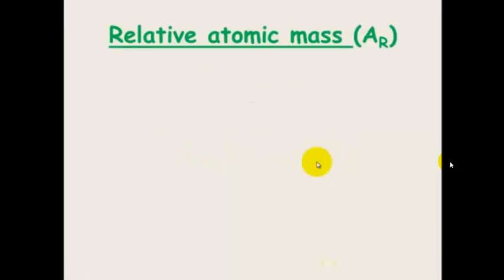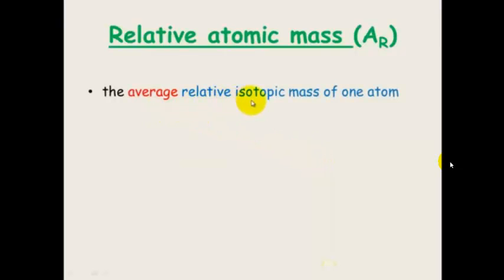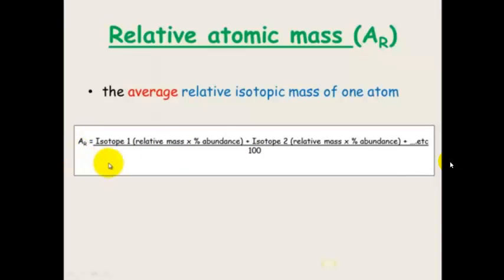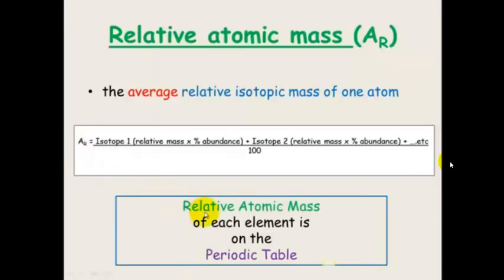Relative atomic mass is the average relative isotopic mass of one atom. If you work out the relative mass of the first isotope of the atom and multiply that by its abundance, and add that to the second isotope's relative mass times abundance, etc., and divide that by 100, you will get the relative atomic mass of that atom. Relative atomic mass is found on the periodic table.